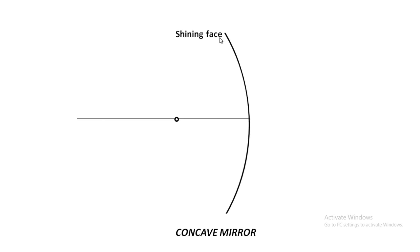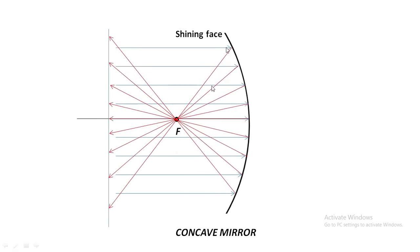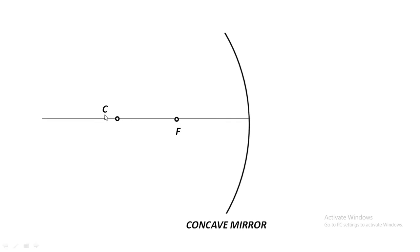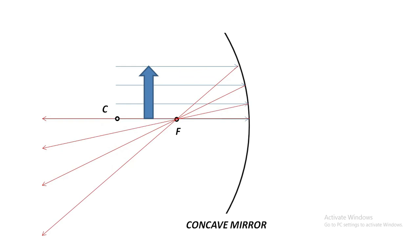Now let us see why this is happening. In a concave mirror, the shining face reflects light rays incident on it back through a common point called the focus point F. There is another important point called C — when you draw a circle out of the mirror's curvature, C is the center of that circle, which is why it is called the center of curvature. These two points — F and C — are the important points of a concave mirror.